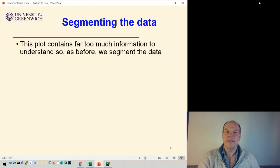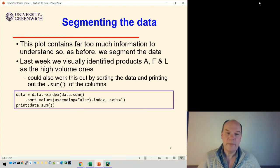So, first thing to do is segment the data, just like we did last week. And last week, we identified products A, F and L as being the high-volume ones. And we can also work this out by sorting the data, or we can do a selection by value.